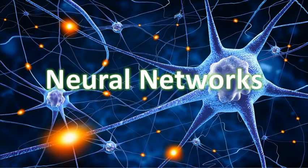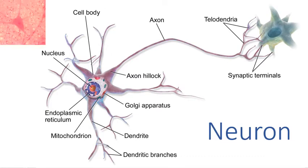Deep learning is actually the descendant of neural networks. Deep learning is based on artificial neural networks, which is inspired by biological neural networks. Here is a picture of a neuron — a cell that carries electrical impulses. A neuron consists of three main parts: a cell body, a dendrite, and an axon. Dendrites are branches of neurons that receive signals from other neurons and pass the signal to the cell body. Axons can be over a meter long in humans and pass the electrical signal to other neurons.